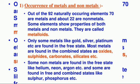Now we shall see the occurrence of metals and non-metals. Out of 92 naturally occurring elements, 70 are metals and about 22 are non-metals. Some elements show properties of both metals and non-metals — those elements having both properties of metals and non-metals are called metalloids.